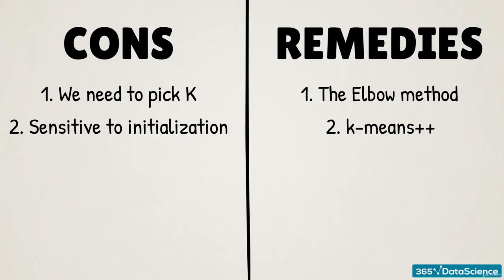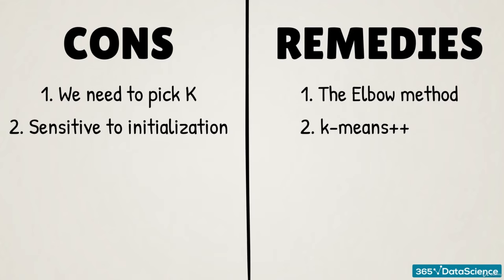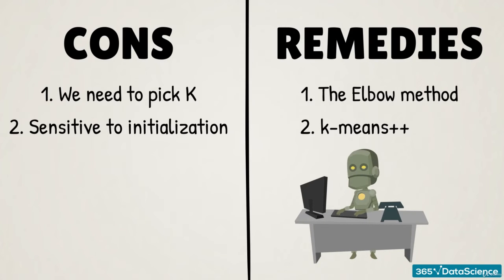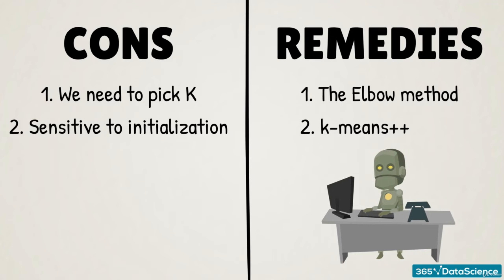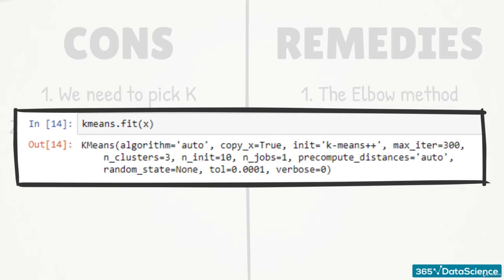It is called k-means plus plus. The idea is that a preliminary iterative algorithm is run prior to k-means to determine the most appropriate seeds for the clustering itself. If we go back to our code, we will see that sklearn employs k-means plus plus by default. So we are safe here, but if you are using a different package, remember that initialization matters.